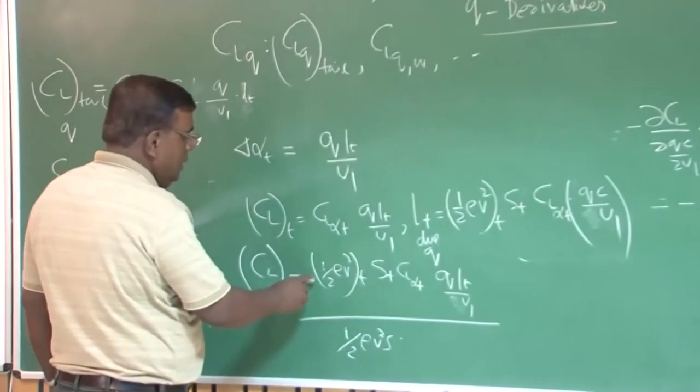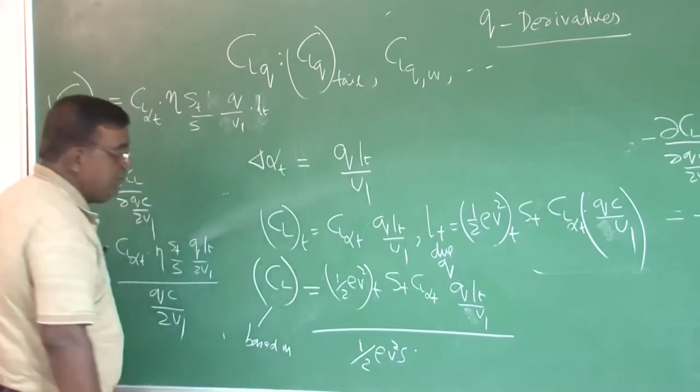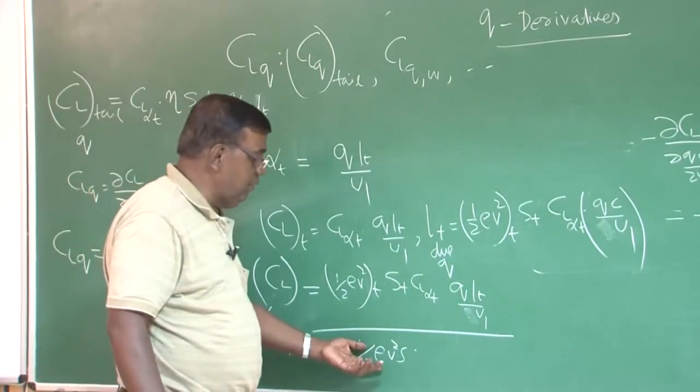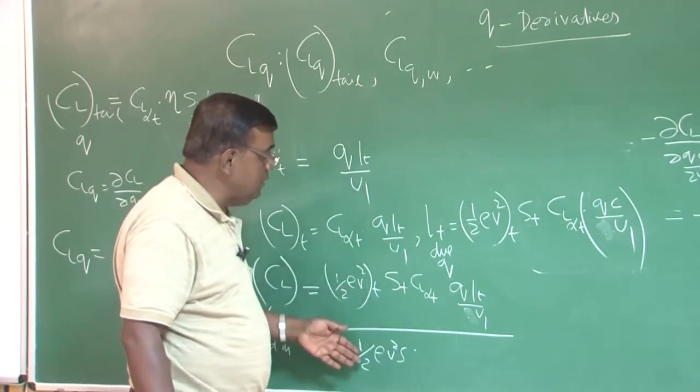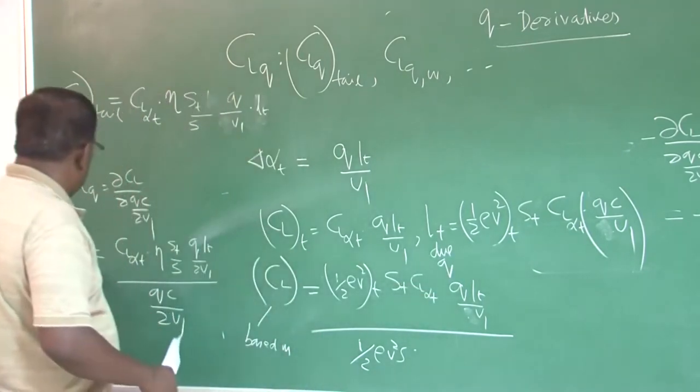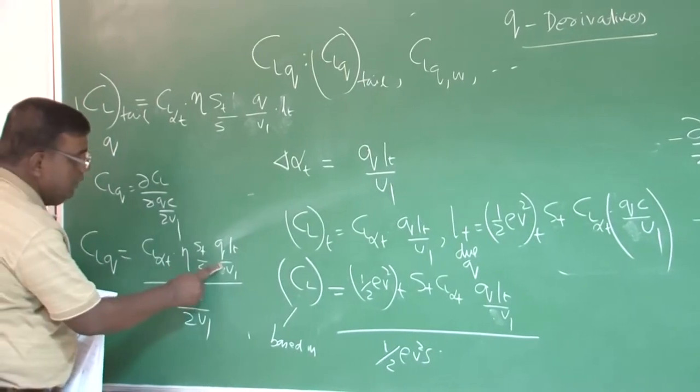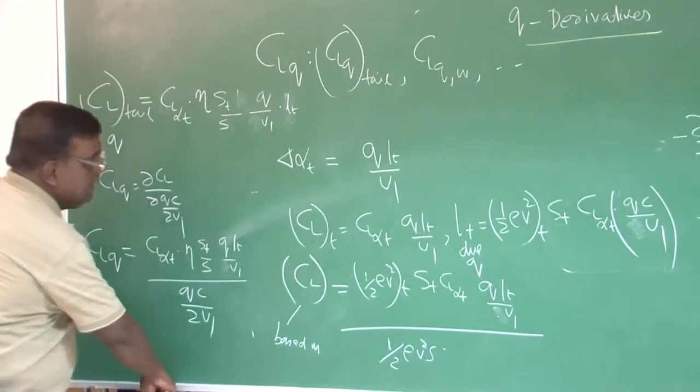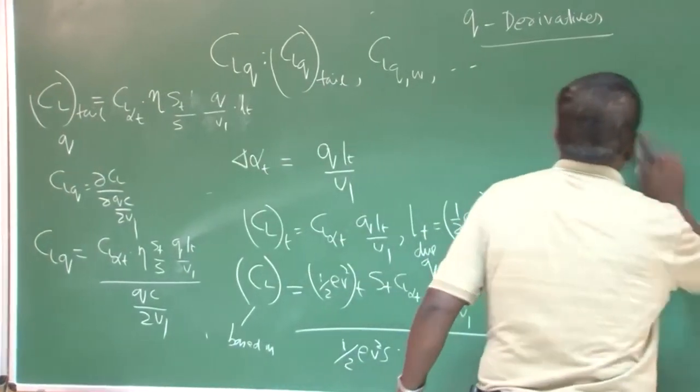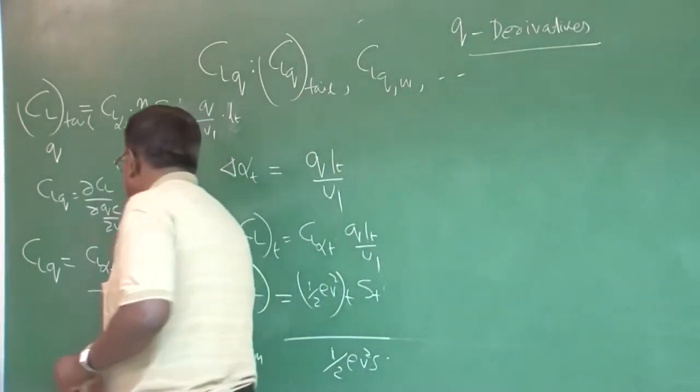So, CL will be, this CL is based on aircraft reference, then based on free stream dynamic pressure. So, I divide by half rho v square free stream into S. So, this to this is nita HT CL alpha tail Q Lt by u1. And once I have to find out CLq. So, this 2 is not here. So, I divide it by this. And then I get an expression, which is given known, which I have done in my last course also, you can refer to that.